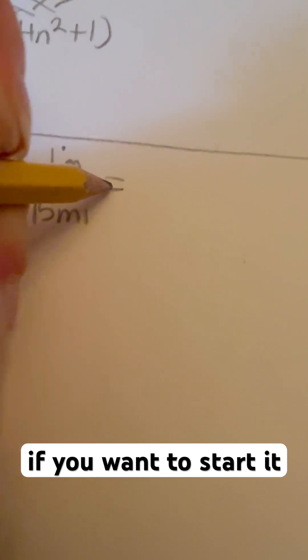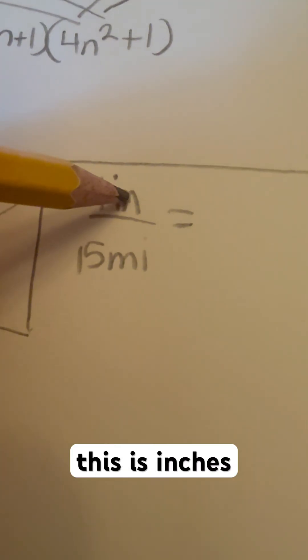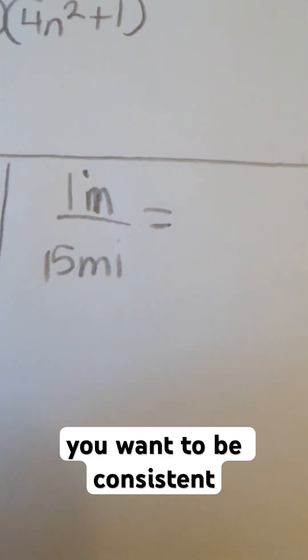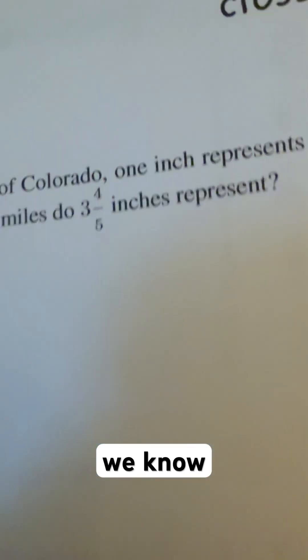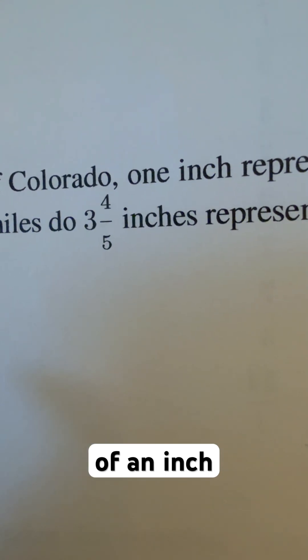If you want to start it off this is probably the best way to do this. Again this is inches and you want to be consistent in one way or another. Now we're looking for how many miles and we know that three and four fifths of an inch is the representation of it.